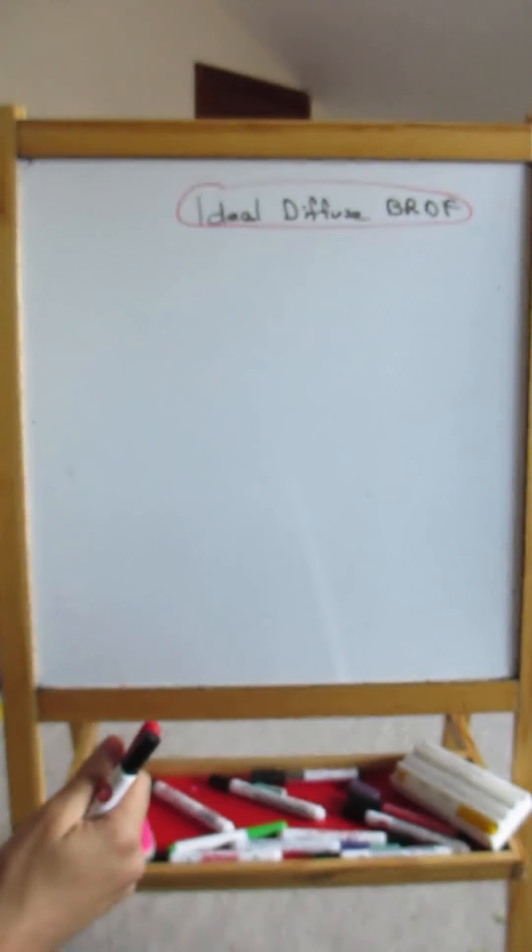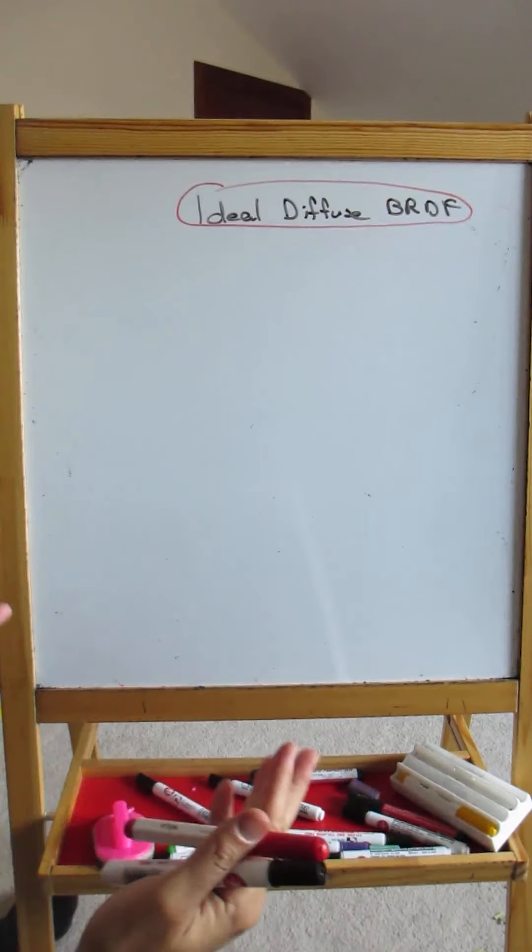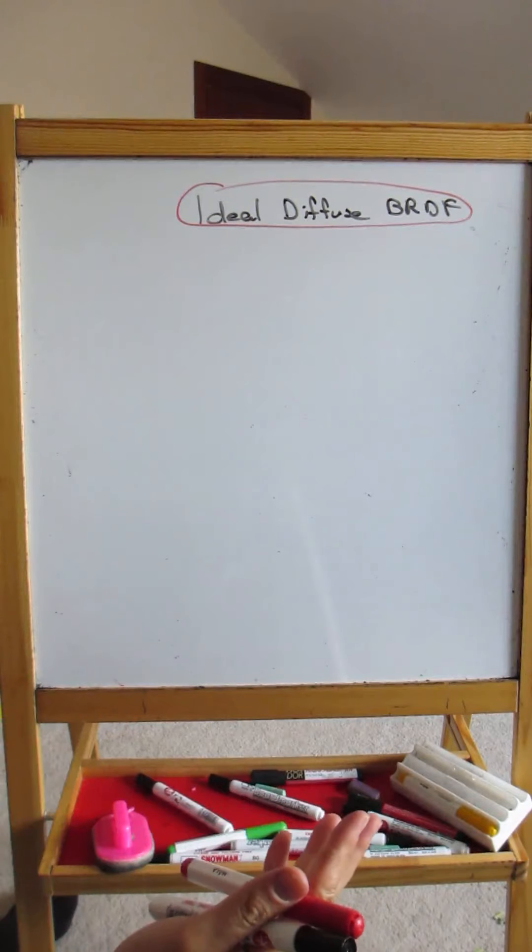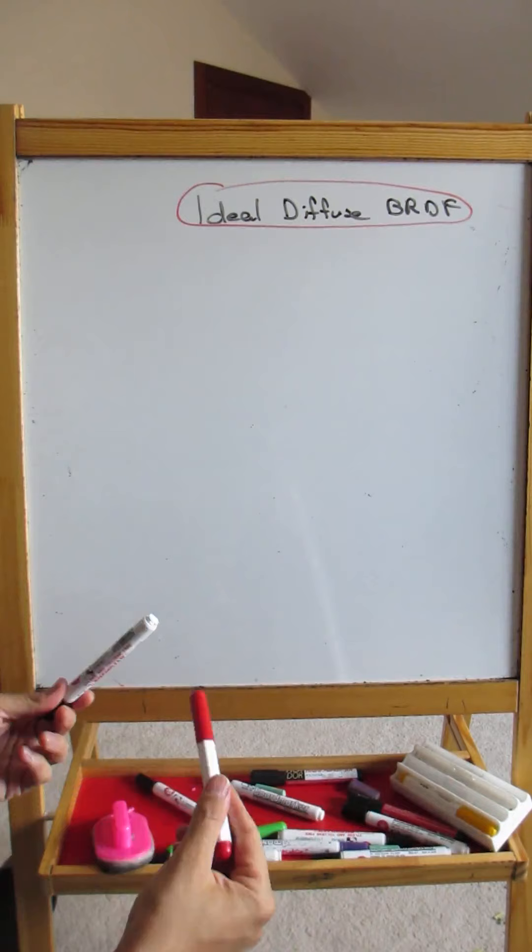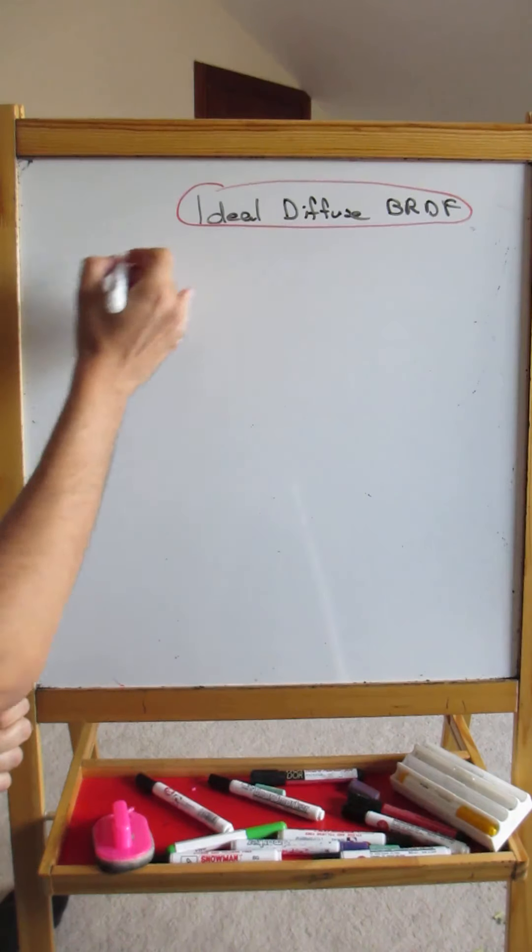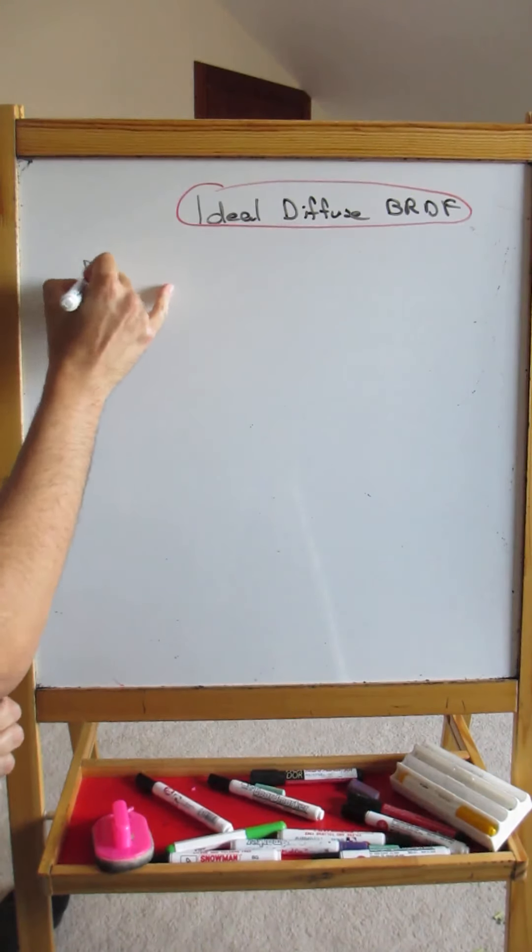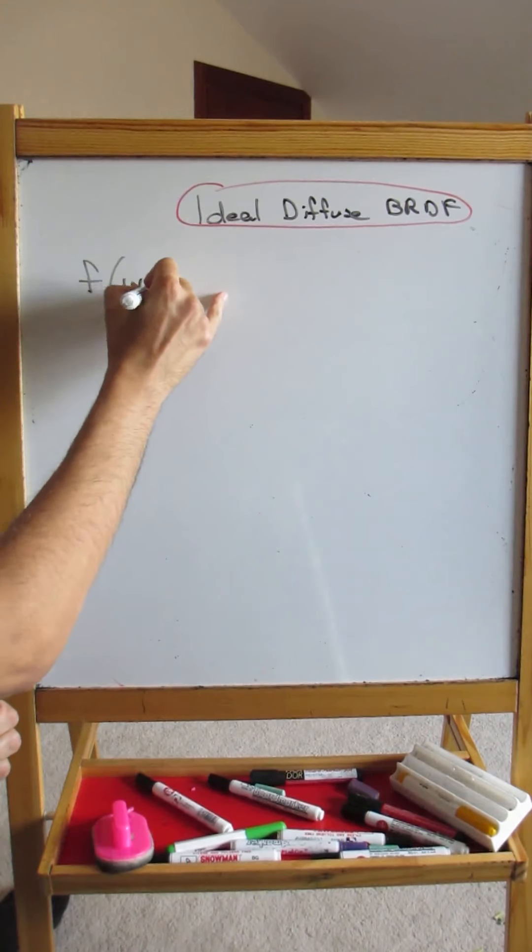Okay, so let's use this result to derive a formula for ideal diffuse BRDF. So what is ideal diffuse BRDF? It's a surface or it's a BRDF that reflects light equally in all possible directions. So it has no selectivity for incoming or outgoing direction.